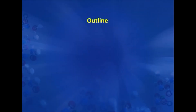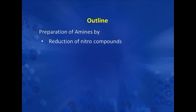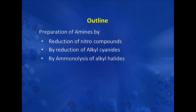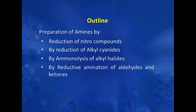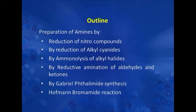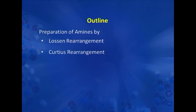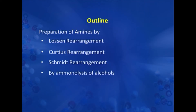In the present lecture, we are going to discuss methods of preparation of amines. Amines can be prepared by the reduction of nitro compounds, by reduction of alkyl cyanides, or by aminolysis of alkyl halides. They can be produced by reductive amination of aldehydes and ketones, synthesized by Gabriel phthalimide synthesis, or prepared by Hoffmann bromamide reaction. Related reactions include Lossen rearrangement, Curtius rearrangement, and Schmidt rearrangement. Amines can also be prepared by the aminolysis of alcohols and by the reduction of oximes and amides.